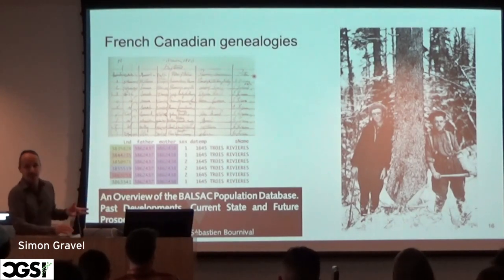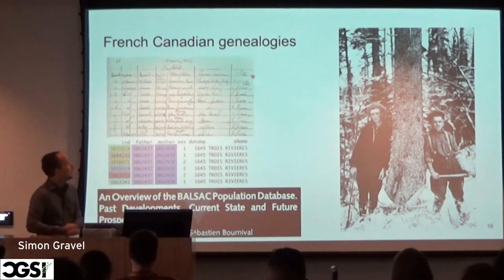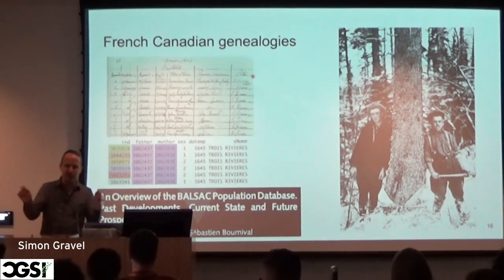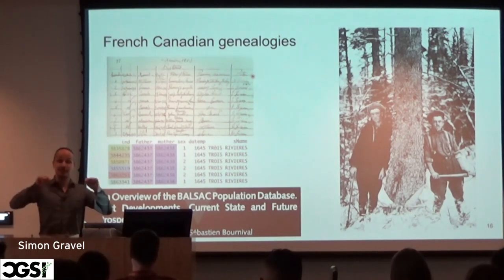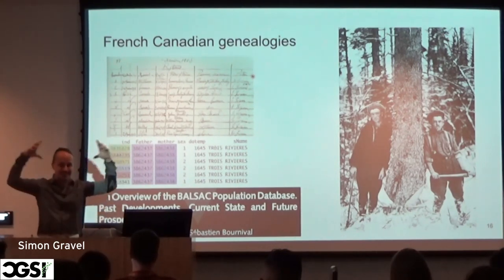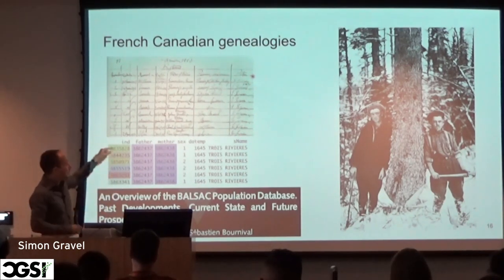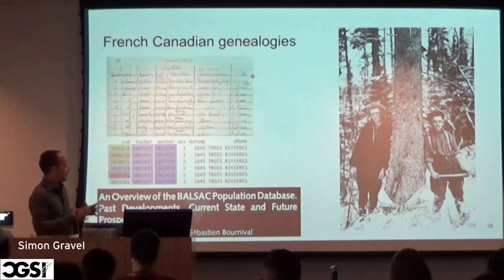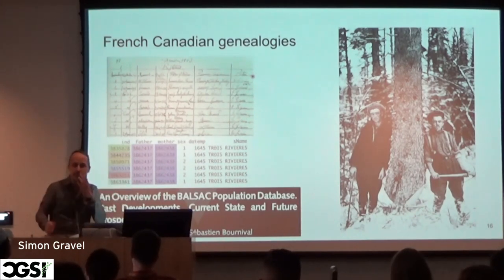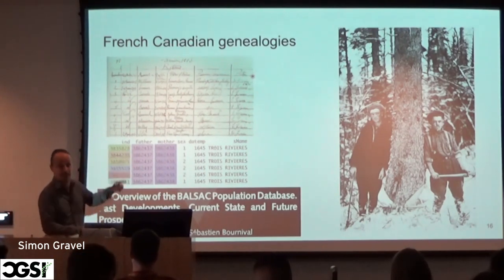Another large genealogy I'll be talking about today is Quebec French Canadians. The Catholic church was very powerful, and priests kept good notes of who got married and the parents of people who got married. Since the 1970s, people have by hand been digitizing these priestly records. Now we have one dataset with about six million people in it — one large, very complete pedigree.